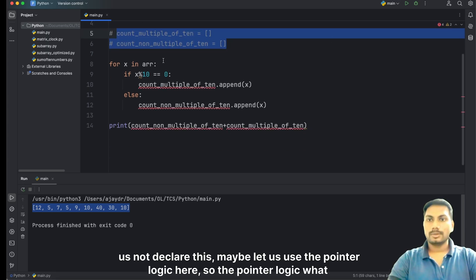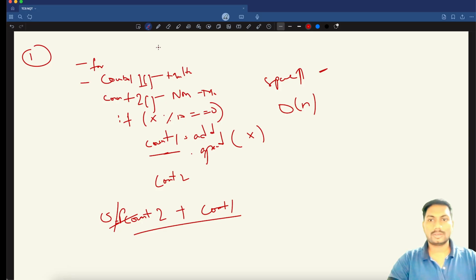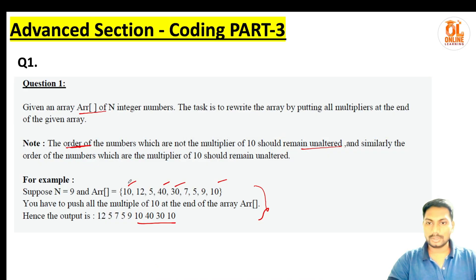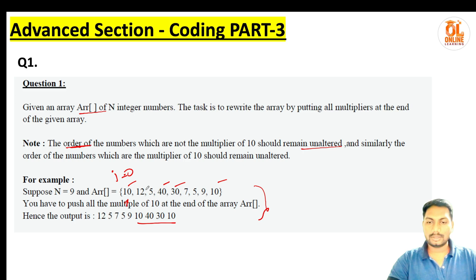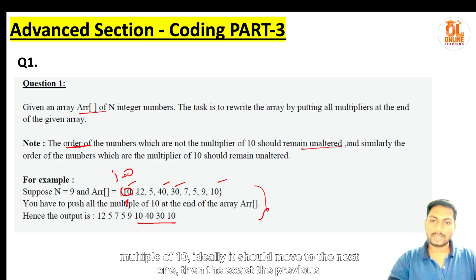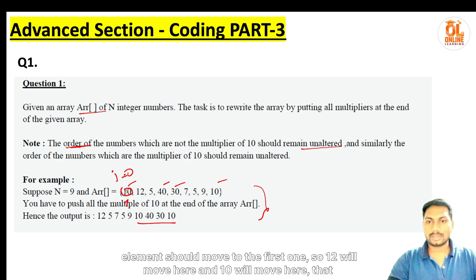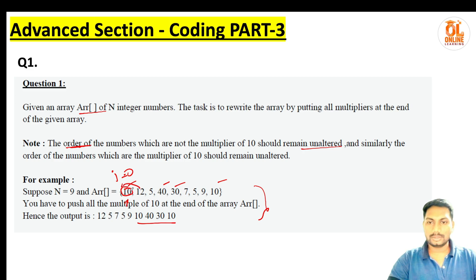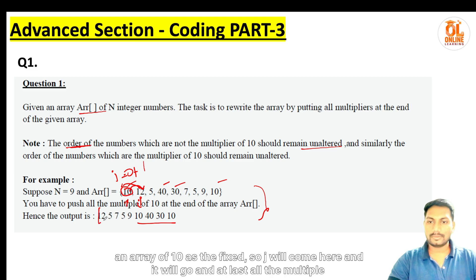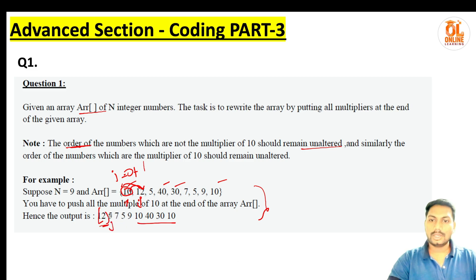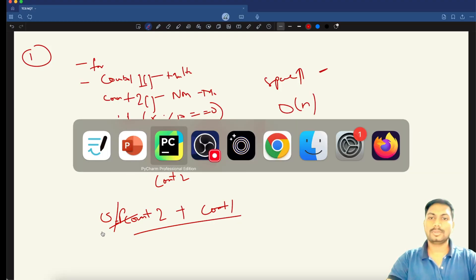Instead, let's use pointer logic. We declare a pointer j = 0. As we iterate through the array, if the current element is a multiple of 10, we move to the next. If it's not a multiple, it should move forward — element at index i swaps with element at index j — and j increments. This way, non-multiples accumulate at the front and all multiples of 10 end up at the end.